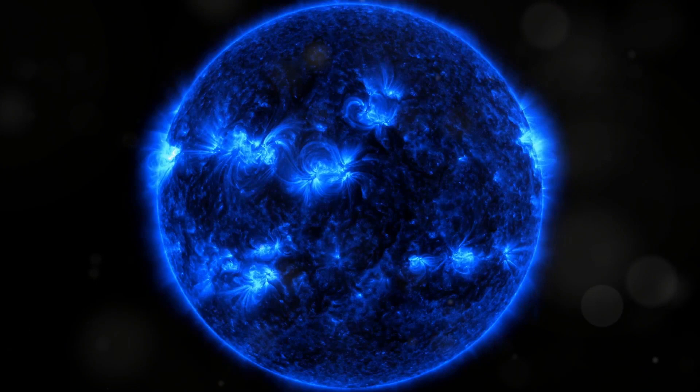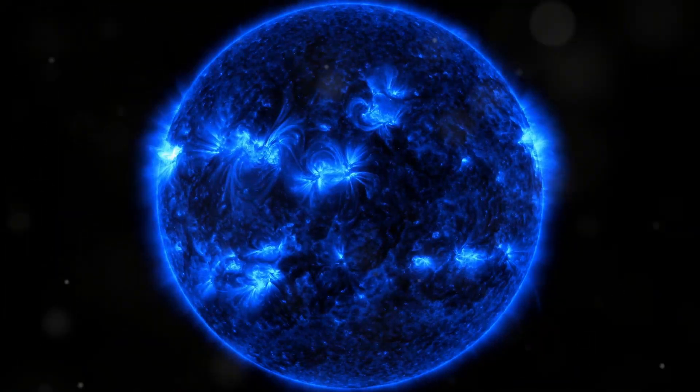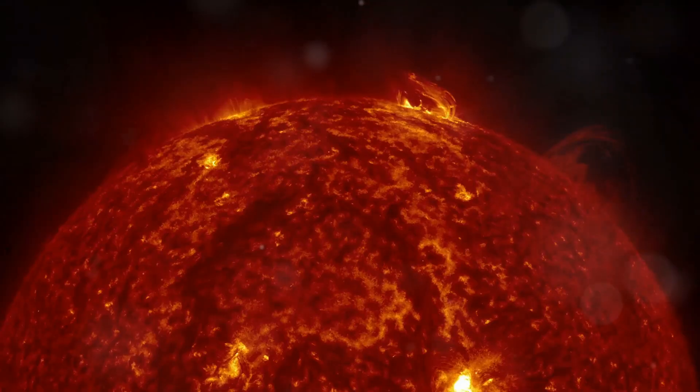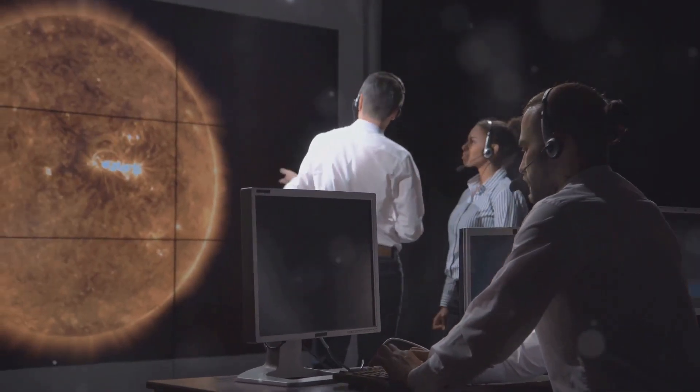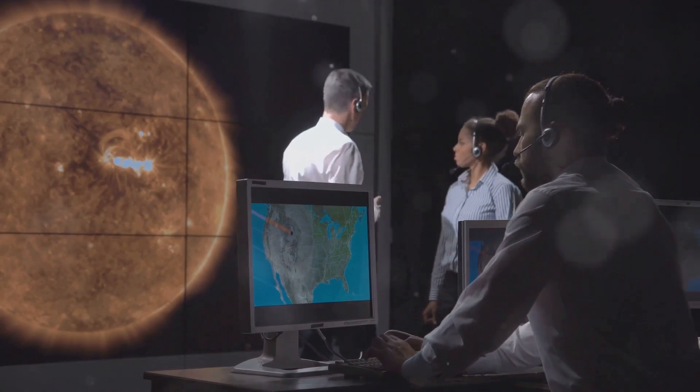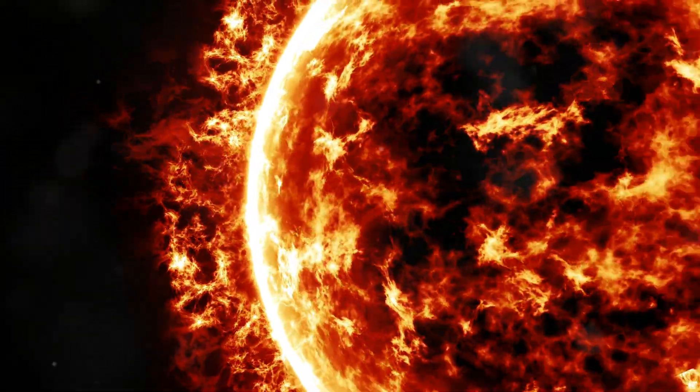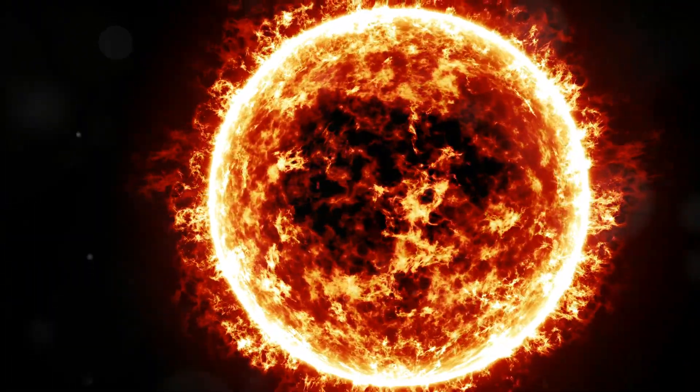For over a century, the origins of the Sun's magnetic field have baffled scientists. Since its discovery in 1908, we've been scratching our heads, trying to pinpoint exactly where this magnetic magic happens. Most theories suggested it was deep within the Sun, buried far beyond our reach.